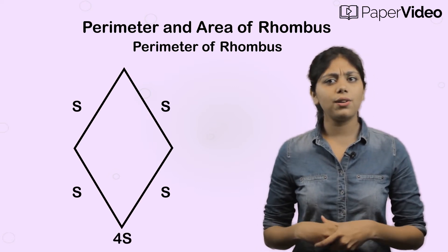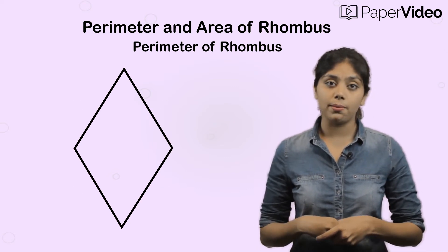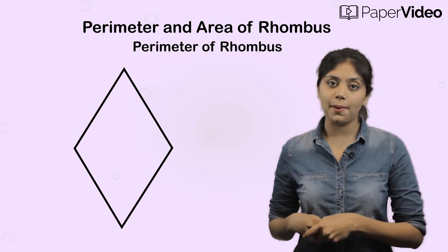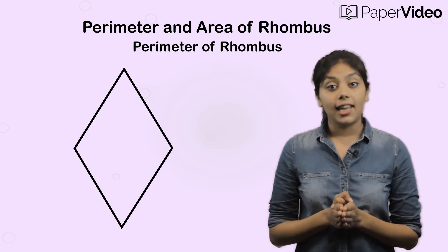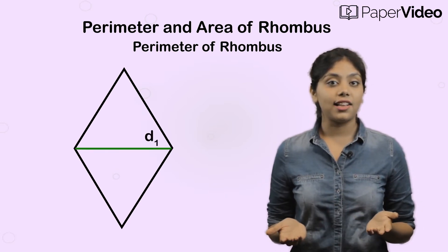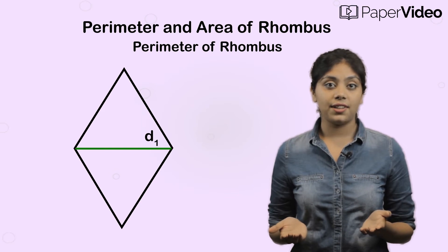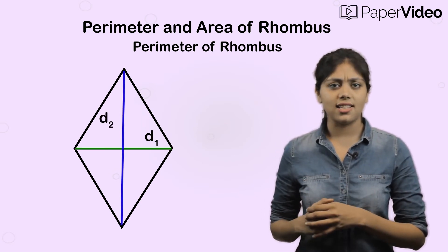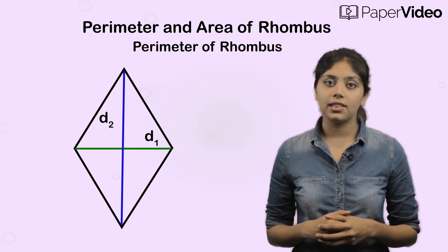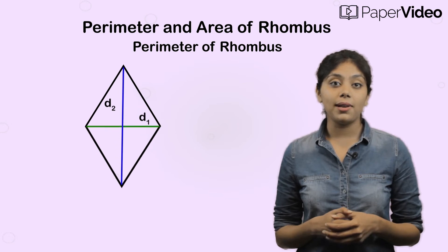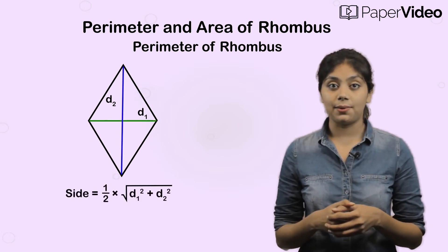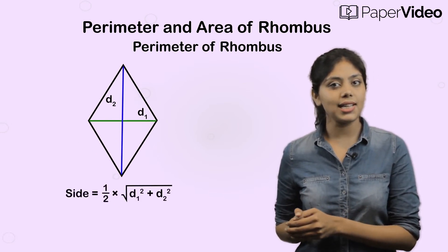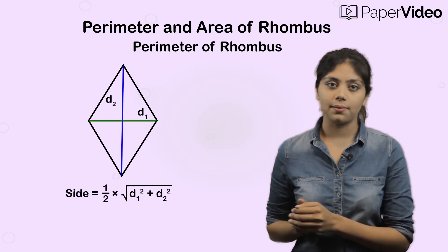What if we don't know the length of the side of the rhombus? Then how will you calculate its perimeter? In such a case, we can use the length of the diagonals of the rhombus to find the length of its sides. But how do we do it? Using the formula: side equals half times the square root of D1 squared plus D2 squared.